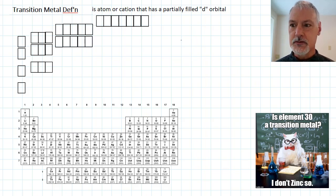So let's begin with the definition. IUPAC defines a transition metal as an atom or cation that has a partially filled d-orbital.